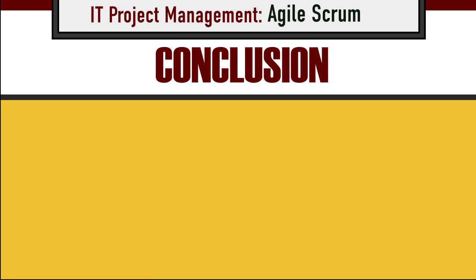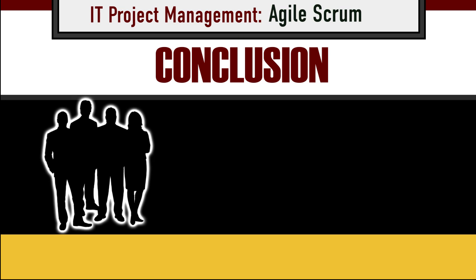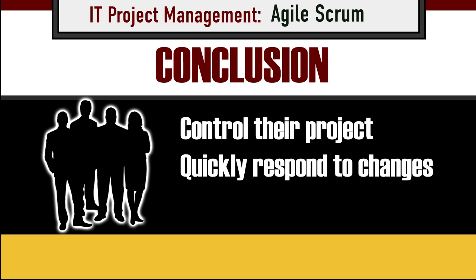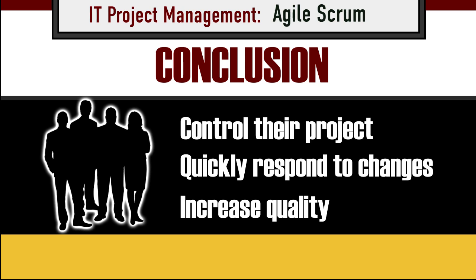The Agile Scrum enables a software development team to control their project, quickly respond to changes, and increase the quality of the deliverables. The Agile Scrum allows the team to be, well, more agile.